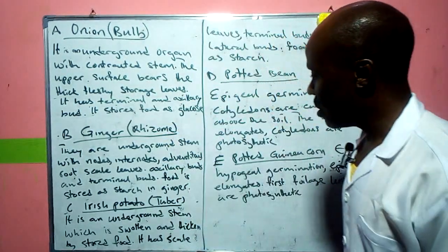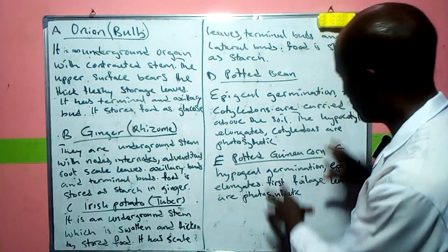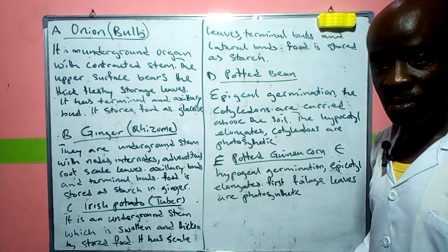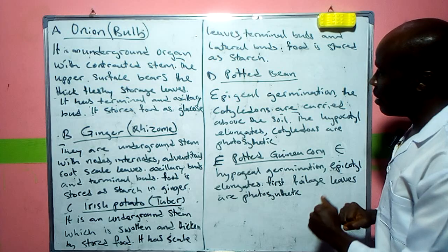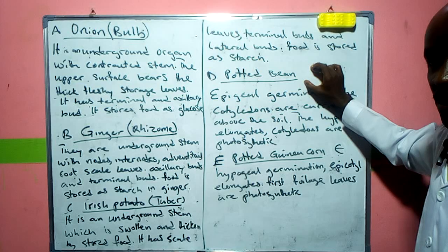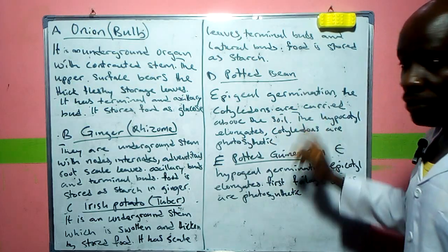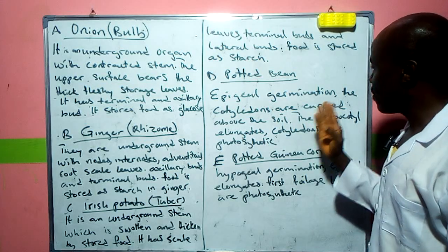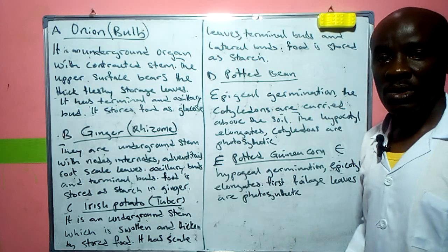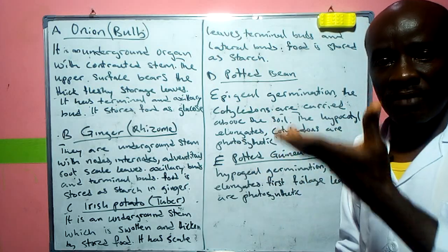These specimens are all products of vegetative propagation, while beans and corn are products of sexual reproduction in plants. Now let's look at the types of germination. For beans, we have epigeal germination, which results from the cotyledon being lifted up above the soil.